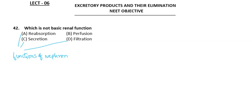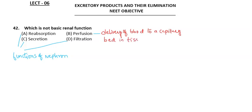Perfusion is different — the meaning of perfusion is the delivery of blood to a capillary bed in the tissue, or simply the passage of fluid through the circulatory or lymphatic system. Perfusion is not a basic renal function. So the answer is B.